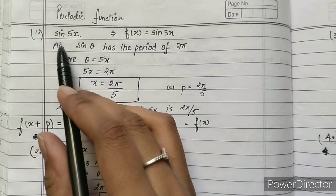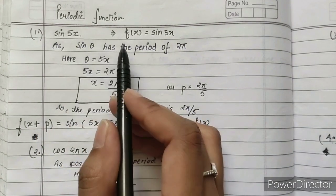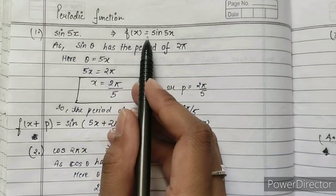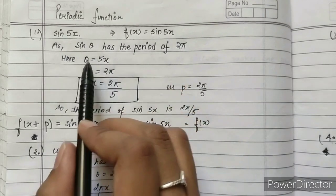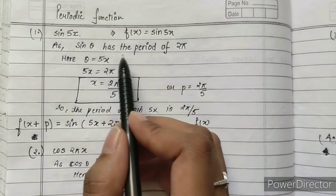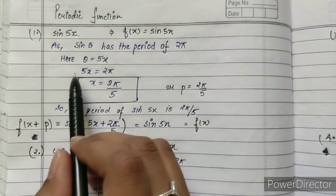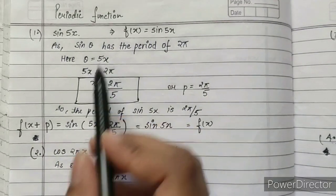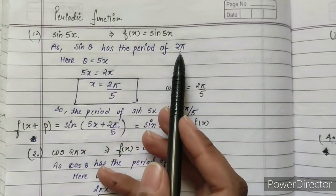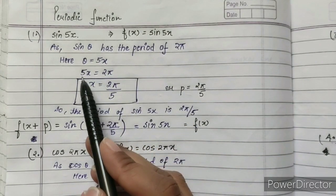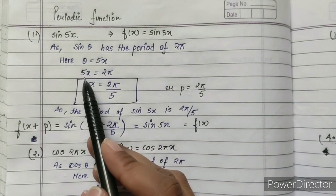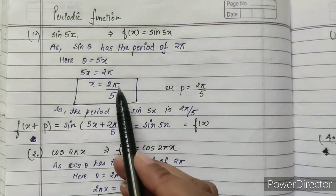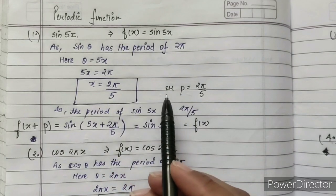Let us see some more examples. The first example is sin(5x), so f(x) = sin(5x). Since sin(θ) has a period of 2π, here θ equals 5x. We equate 5x = 2π, and solving gives x = 2π/5.